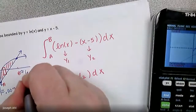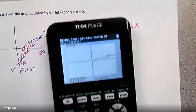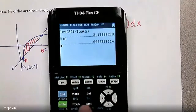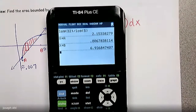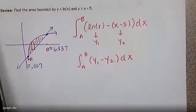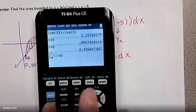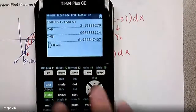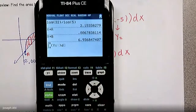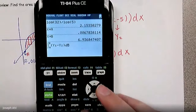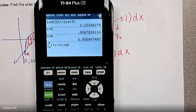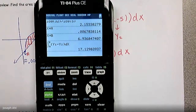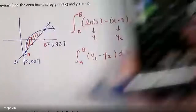Go back to the graph and calculate the other point of intersection — second trace, choice 5. The other point of intersection is approximately 6.937. We store that as B. So if we quit and do X, store that as B, we now have B set as 6.937. Therefore, to find the area between LNX and X minus 5, we do math 9 — the definite integral from A to B of Y1 minus Y2 with respect to X, using alpha trace Y1 minus alpha trace Y2. We get the area between those two curves: 17.130 square units.